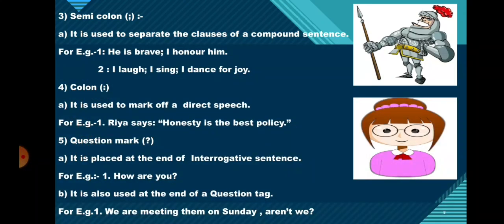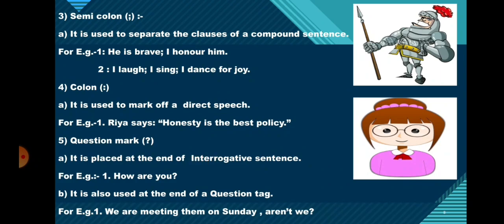Next, the question mark. It is placed at the end of an interrogative sentence. For example: 'How are you?' So at the end of an interrogative sentence, we put a question mark. It is also used at the end of a question tag. For example: 'We are meeting them on Sunday, aren't we?' So after a question tag, we also put a question mark.